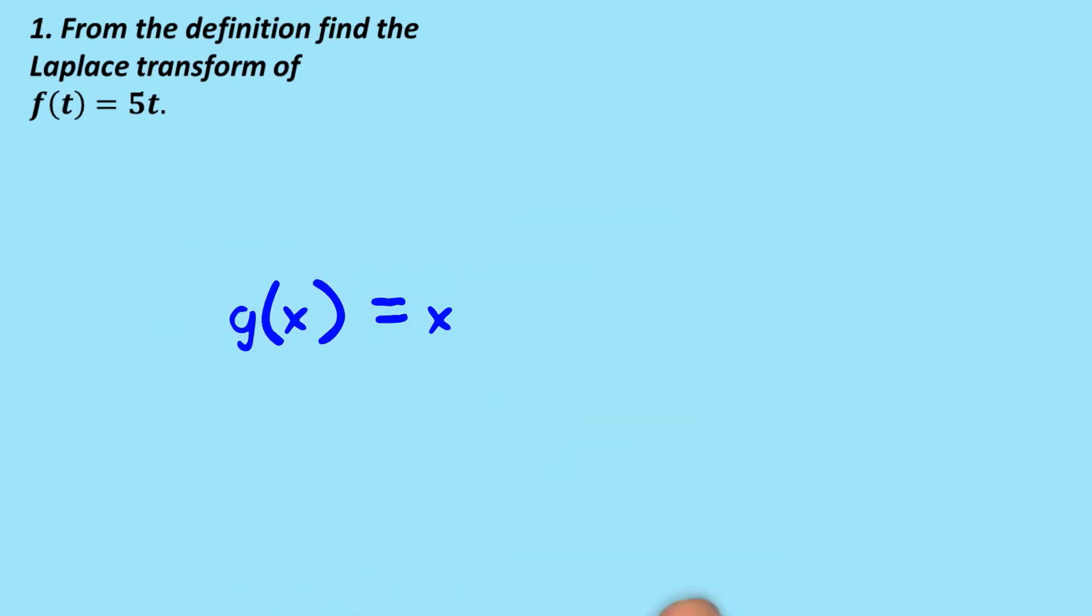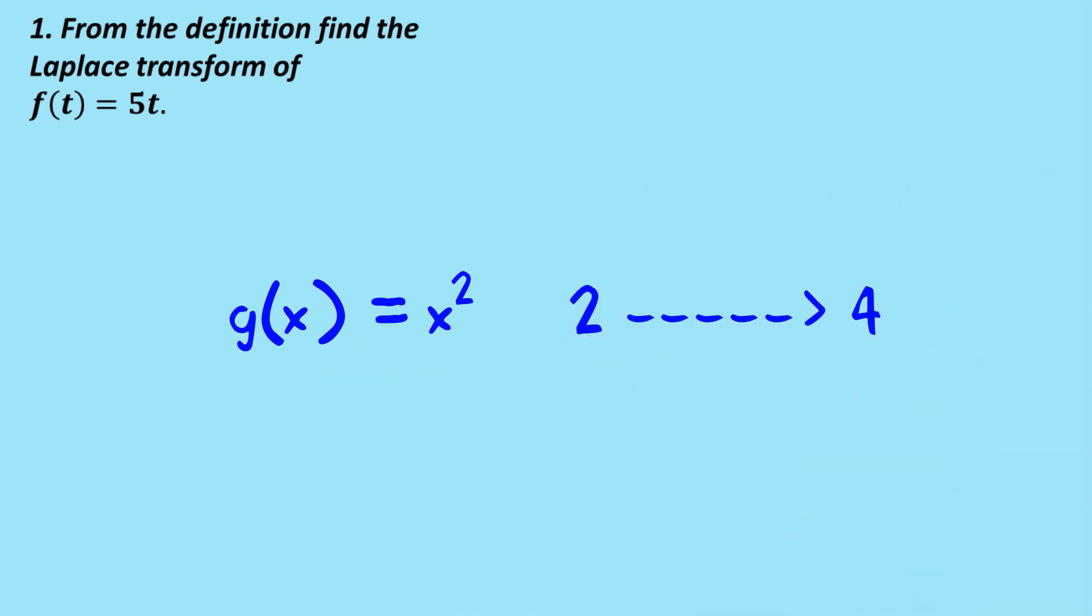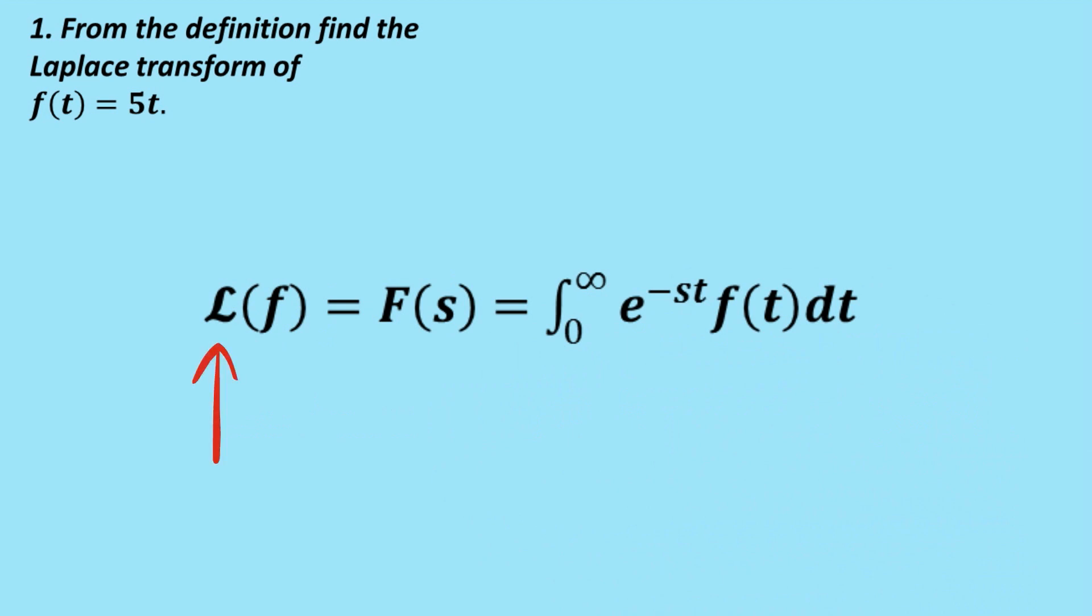So a lot of times in high school you would have been used to a function, say g of x equals x squared, and that takes a number, say the number 2, and it transforms it into another number, 4. What the Laplace transform does is a little bit more complicated. It transforms a function to another function. So we normally use this funny L to indicate the Laplace transform of a function f, f of t.